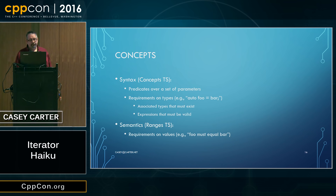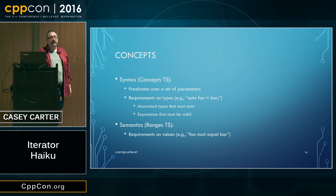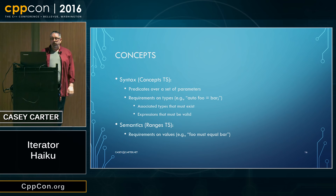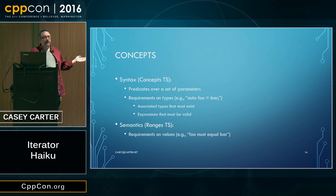These concepts as used in the Ranges TS are a slightly different kind of idea. We take the syntactic concepts and say, syntax needs to have semantics to mean anything. So we apply semantic requirements as well, which I consider to be requirements on values as opposed to requirements on types. The concepts TS lets me say this thing has to have copy construction syntax, but I need to be able to say that the result of the copy is actually equal to the original thing — because that's what copying means.